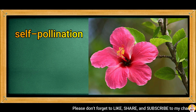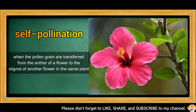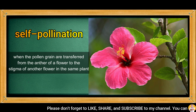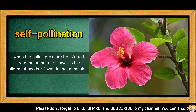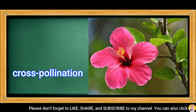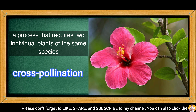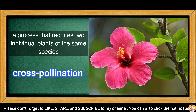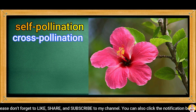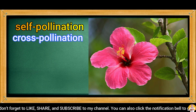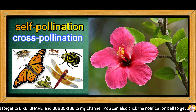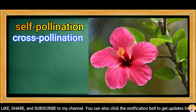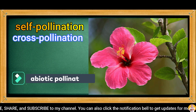Self-pollination happens when the pollen grains are transferred from the anther of a flower to the stigma of another flower on the same plant. Cross-pollination is a process that requires two individual plants of the same species. When pollination is caused by wind and other non-living factors, it is called abiotic pollination.